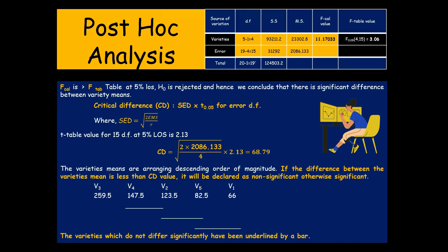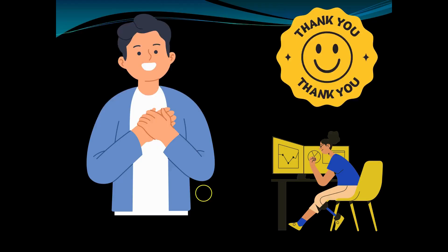One important point: CRD is the only design that uses just two basic principles — randomization and replication — without local control, because the experimental material is homogeneous and no blocking is needed. When dealing with laboratory experiments, set the hypothesis, apply Analysis of Variance using CRD, then provide interpretation and conclusions. In our next video, we will learn how to execute the analysis when evaluating treatments under field conditions, which requires a different kind of design. Thank you very much — hope you liked this video.